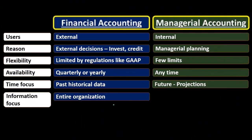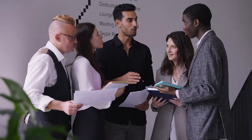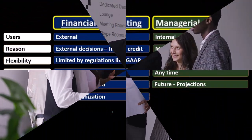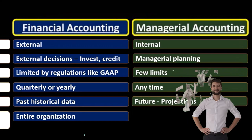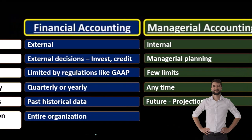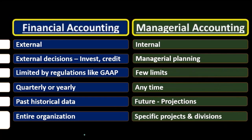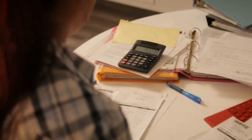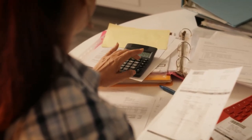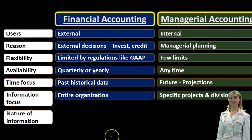For the information focus: financial accounting covers the entire organization. The financial statements represent the whole company because investors and creditors are worried about the organization as a whole — not individual segments. Managerial accounting goes into more detail, looking department by department and product by product. Financial accountants look at the big picture, while managerial accounting drills down into the nitty-gritty to figure out what can be done piece by piece to improve operations.